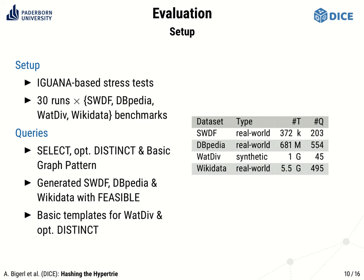Now let's have a look at an evaluation on some serious benchmarking datasets. We used Iguana-based stress tests to benchmark query performance, with 30 runs on each dataset. As datasets, we used SWDF — a small real-world dataset with roughly 400,000 triples; DBpedia — a medium-large real-world dataset with about 700 million triples; WatDiv — a large synthetic dataset with 1 billion triples; and Wikidata — a large real-world dataset with 5.5 billion triples. The queries used were SELECT queries with a basic graph pattern, some of which have a DISTINCT modifier. Queries for the real-world datasets were generated from query logs using the benchmark generation framework FEASIBLE.